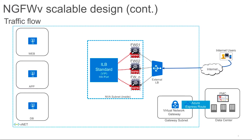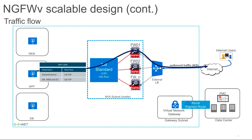For outbound traffic, if a web server, application server, or any workload in your environment wants to reach the internet, that traffic is forwarded to the ILB based on the UDR. Once the traffic is received on the ILB, it load balances that traffic and the firewall source NATs it to the outside interface and forwards it to the external load balancer. The internet user will see the ELB IP address as the source address.